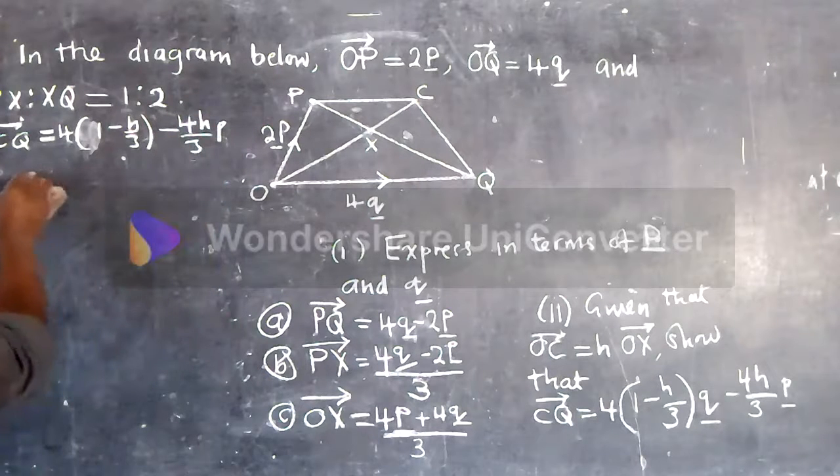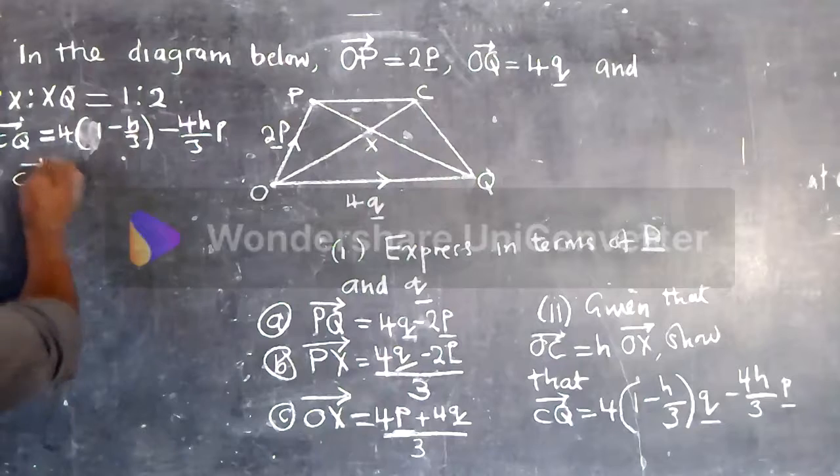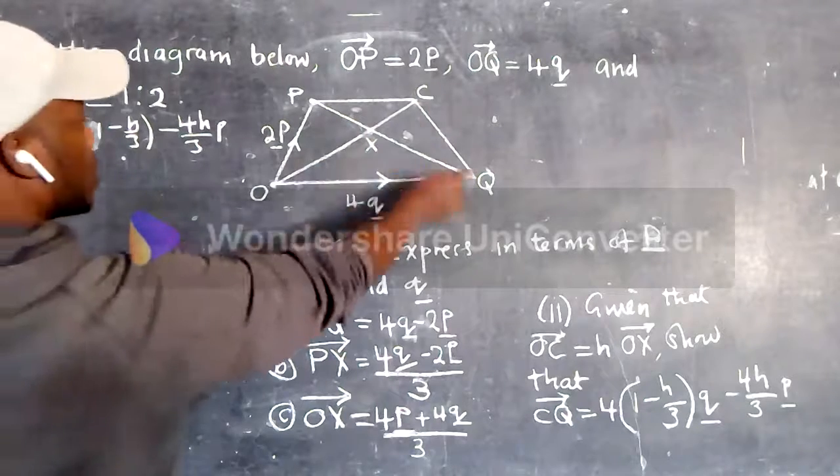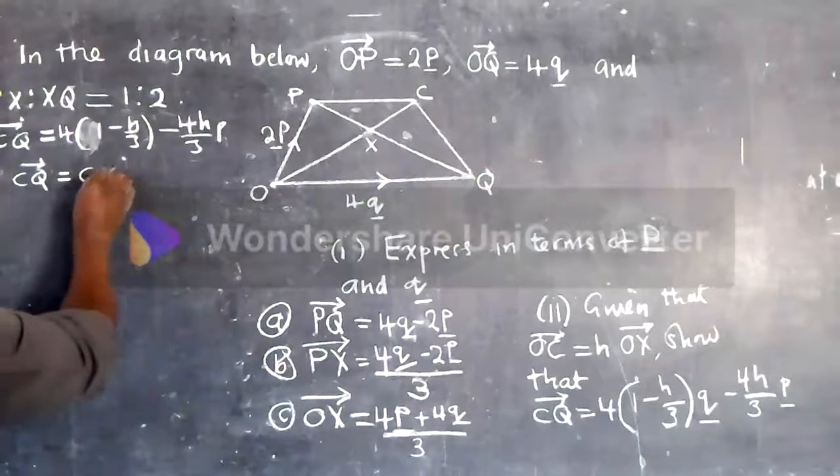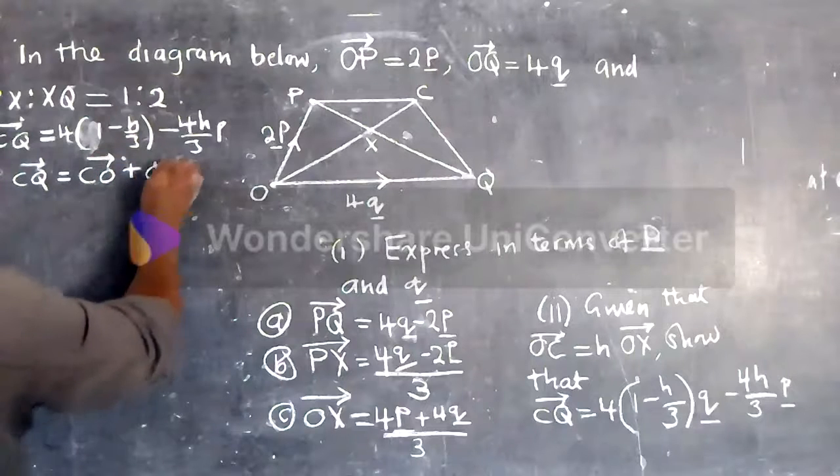Alright, so we say C cube, C cube is equal to C over plus O cube.